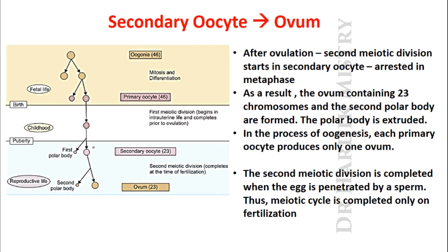Regarding the conversion of secondary oocyte to ovum: just before ovulation, the first meiotic division in the primary oocyte is completed and forms the secondary oocyte. After ovulation, the second meiotic division starts in the secondary oocyte, but it is arrested in the metaphase of the meiotic division.